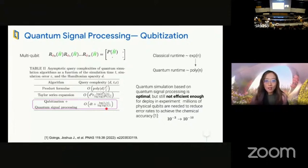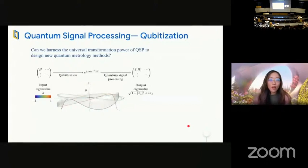quantum signal processing and qubitization-based simulation is one of the most optimal in regard to query complexity among all the existing quantum simulation algorithms. But it is not yet really optimal or efficient enough for deployment in real systems because the error rate for simulation needs to be around chemistry accuracy 10 to minus 10, which definitely requires fault tolerance. So we're asking the question whether we can harness this universal transformation power to design a new type of quantum metrology algorithm.